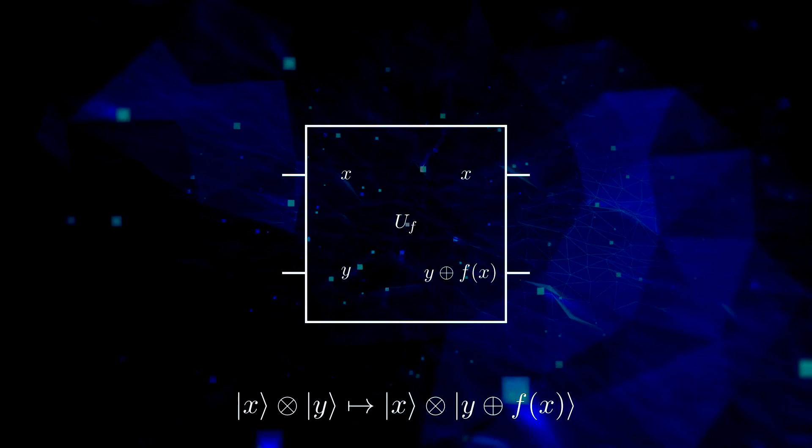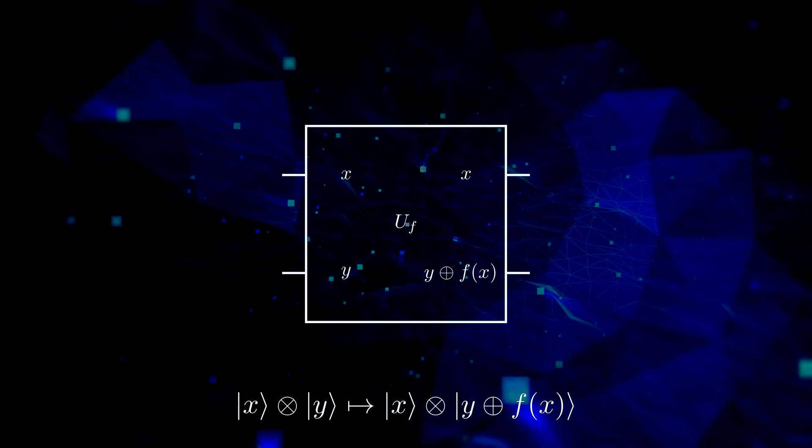Now, in the Deutsch-Jozsa algorithm, we use three Hadamard gates and we measure once.